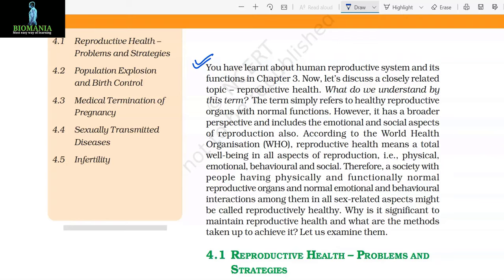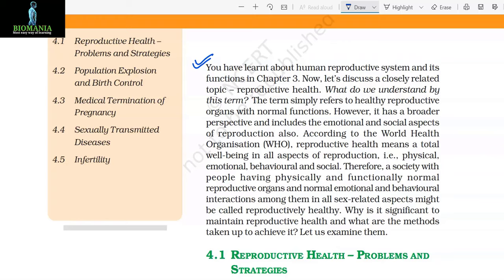According to the World Health Organization (WHO), Reproductive Health means a total well-being in all aspects of reproduction — physical, emotional, behavioral, and social. Therefore, a society with people having physically and functionally normal reproductive organs and normal emotional and behavioral interactions among them in all sex-related aspects might be called reproductively healthy.